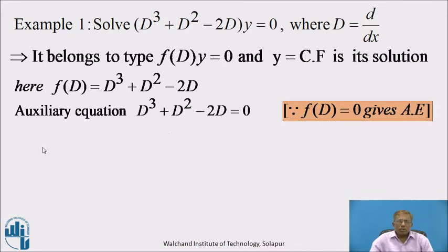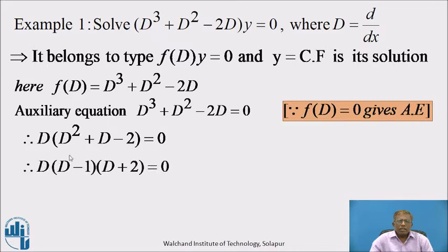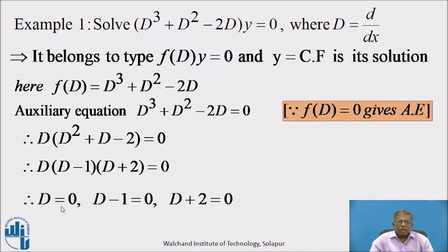Now we have to solve this equation. On the left-hand side, D is common; taken out, we get D(D² + D − 2) = 0. The factors of D² + D − 2 are (D − 1)(D + 2), so D(D − 1)(D + 2) = 0. The product of three factors equal to zero implies D = 0, D − 1 = 0, D + 2 = 0. Therefore D = 0, D = 1, and D = −2.